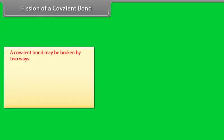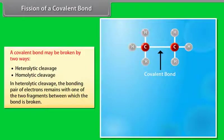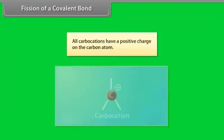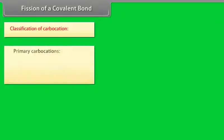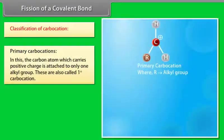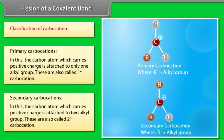A covalent bond may be broken in two ways: heterolytic cleavage and homolytic cleavage. In heterolytic cleavage, the bonding pair of electrons remains with one of the two fragments between which the bond is broken. All carbocations have a positive charge on the carbon atom. Primary carbocations have the positively charged carbon attached to only one alkyl group — also called first-degree carbocations. Secondary carbocations have the positively charged carbon attached to two alkyl groups — also called second-degree carbocations.